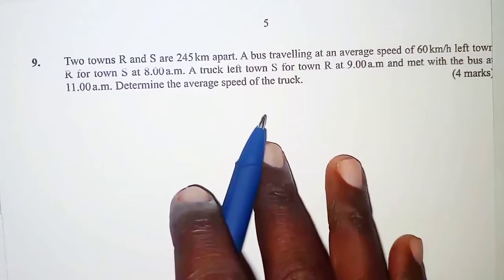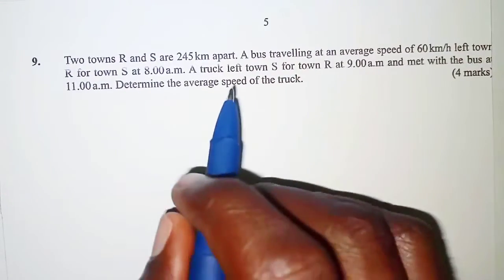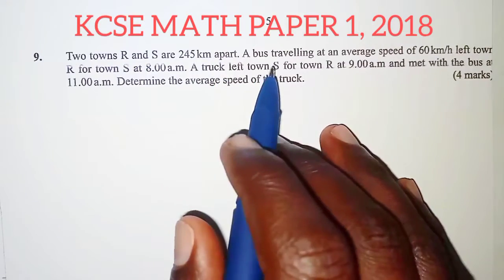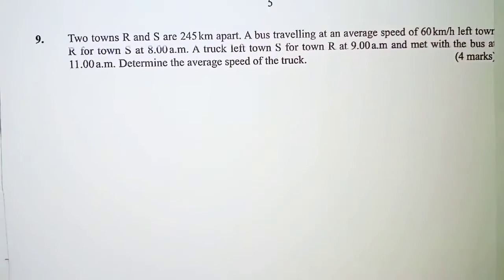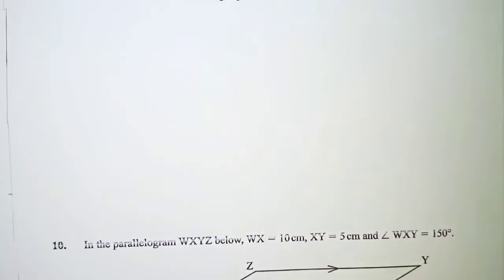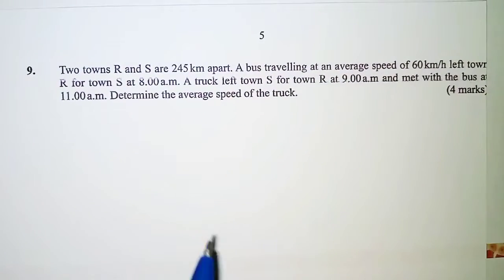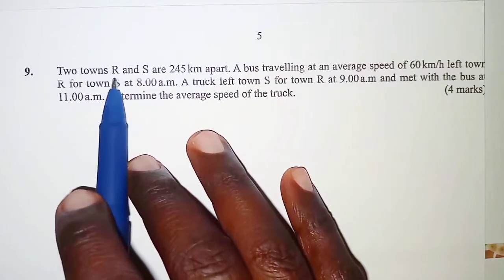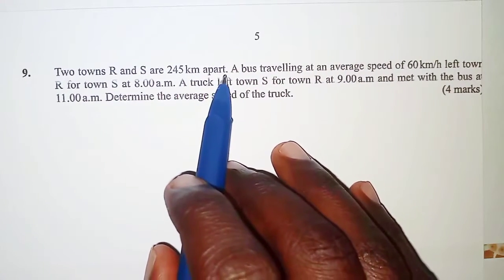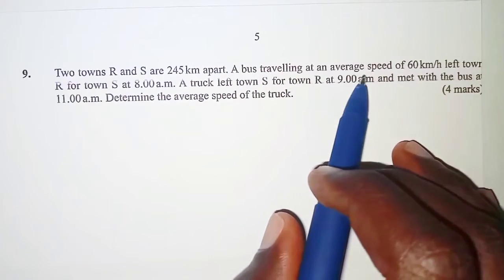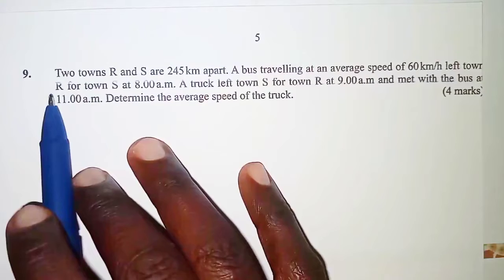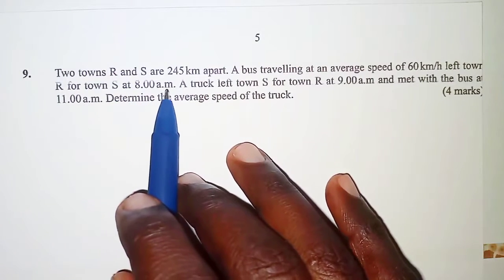Welcome to this presentation. Today we look at KCSE mathematics paper 1, 2018, question number 9 and question number 10. On question 9: two towns R and S are 245 kilometers apart. A bus traveling at an average speed of 60 kilometers per hour left town R for town S at 8 a.m.